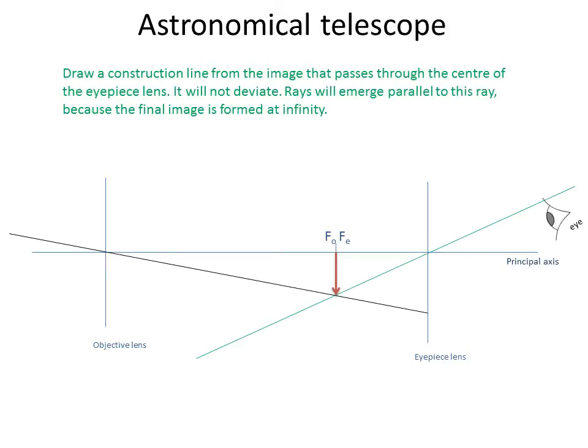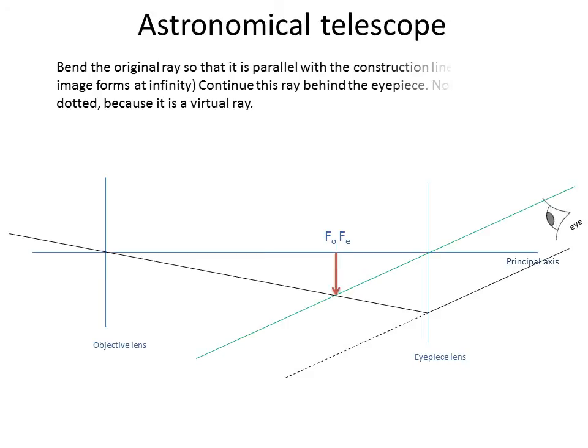Next, you draw a construction ray. This green line passes through the center of the lens, the eyepiece lens, and passes through the image location, and it continues. Any final rays drawn connected to this black ray will emerge parallel to this ray because the final image is formed at infinity. So let's draw some on.